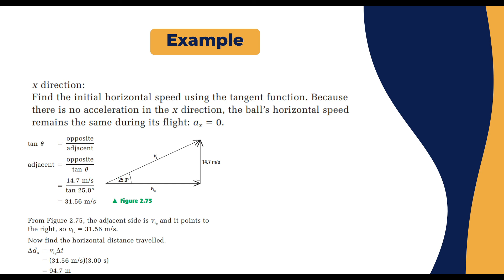To find the x-direction component, we use the tangent function. There is no acceleration in the x-direction, so the horizontal speed remains constant during flight — a_x = 0. We know v_i at 25 degrees and we know v_iy, but we need v_ix.